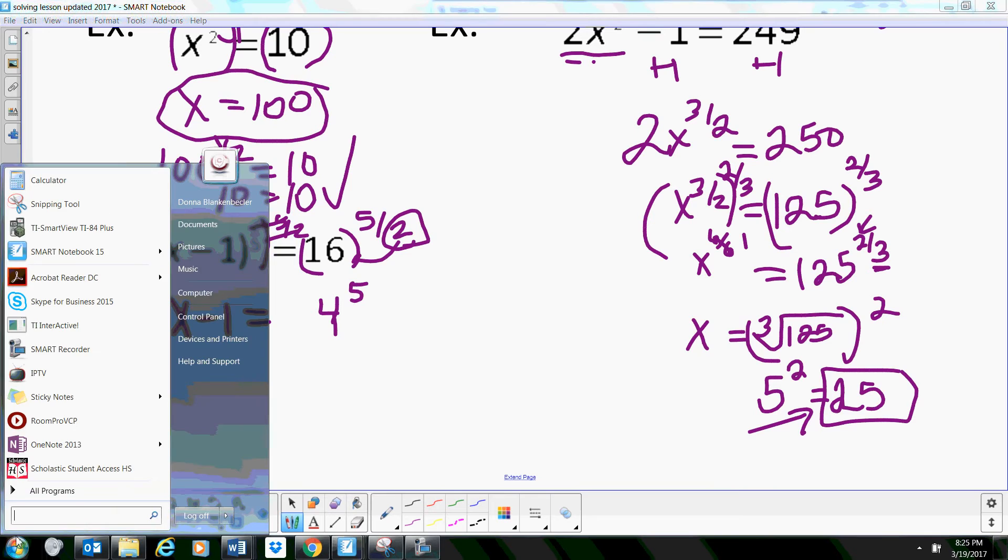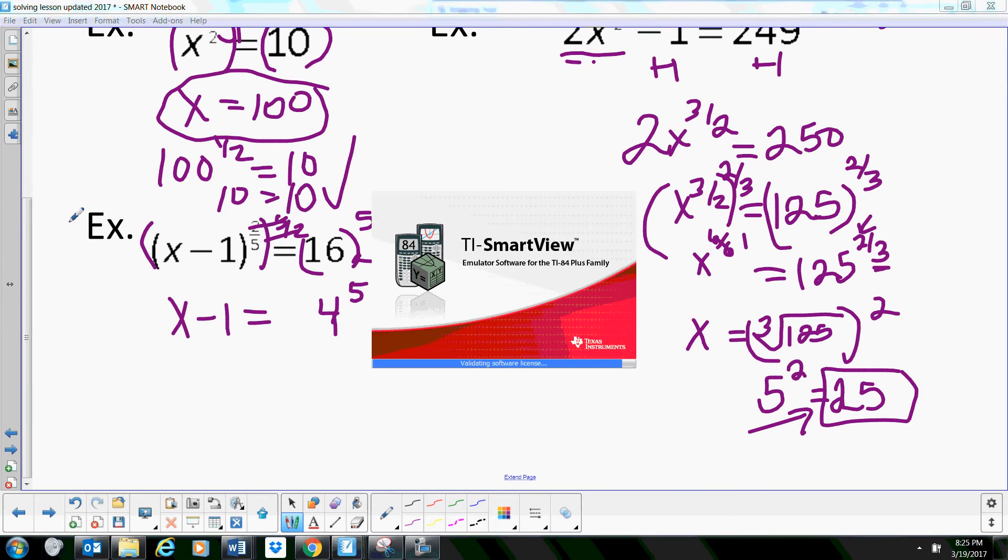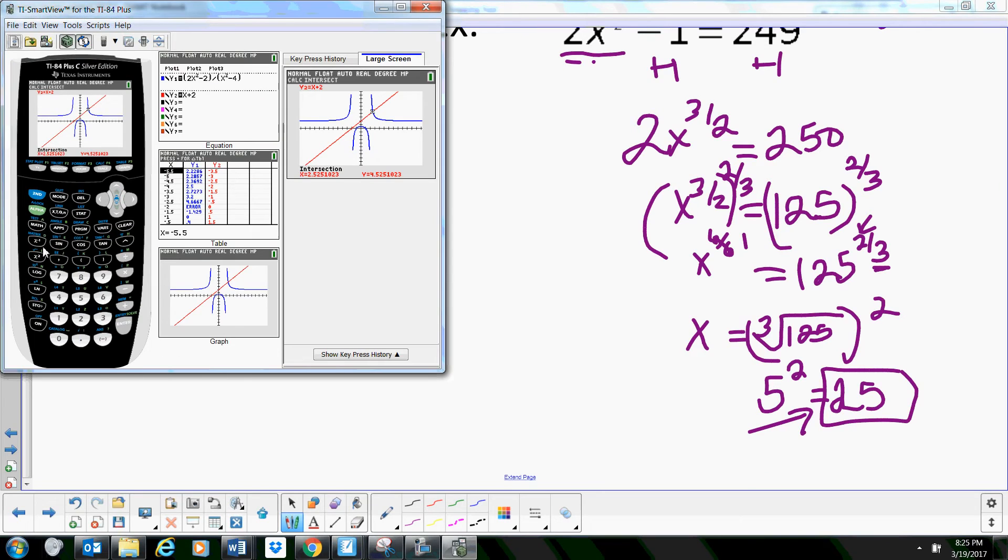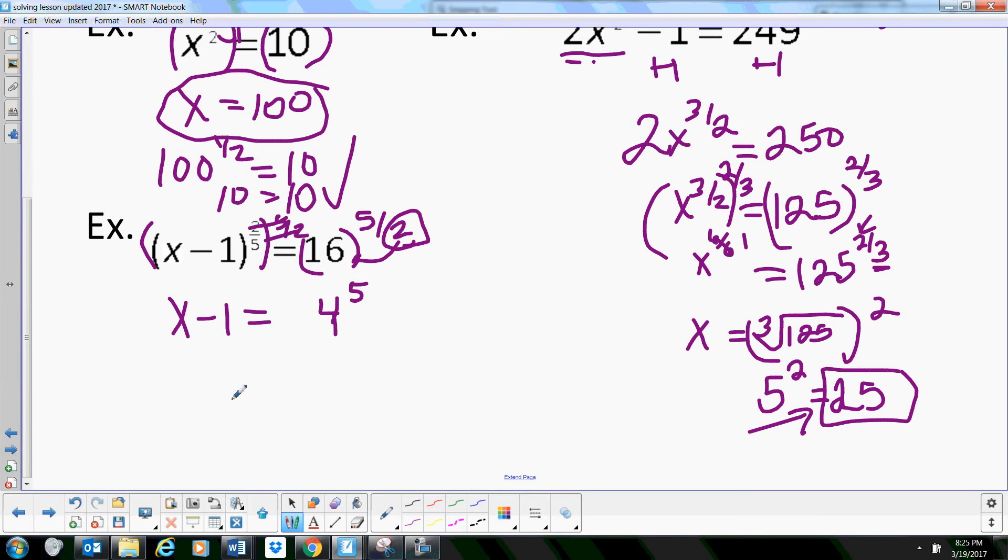Let's see, what is 4 to the fifth? I don't know that off the top of my head. Let's open this up and do that. 4 to the fifth power is 1024. I should know that, but I don't. So 1024.